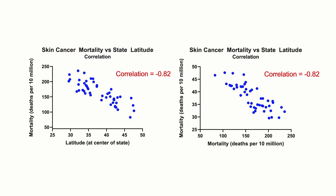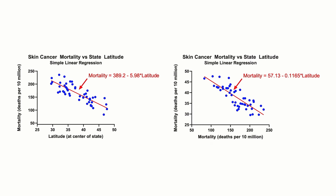Another difference: with correlation, the x and y variables are interchangeable, whereas with regression, the results of the analysis will change if x and y are swapped.